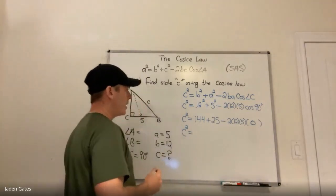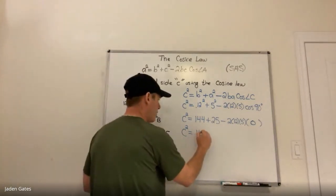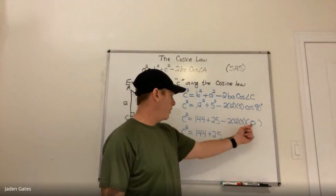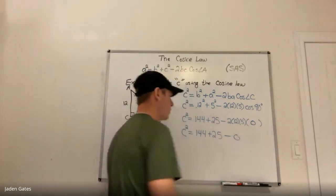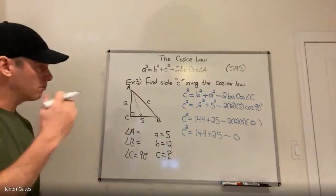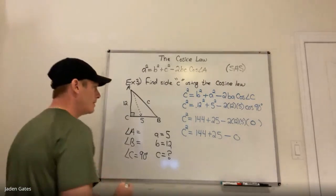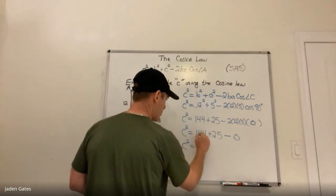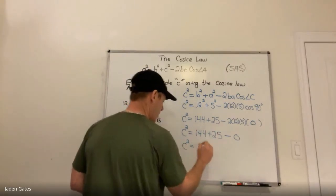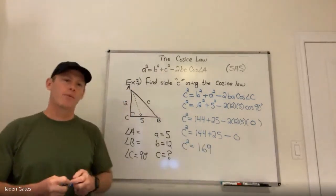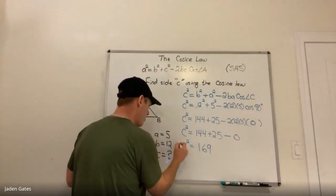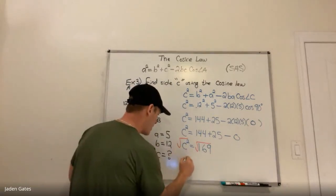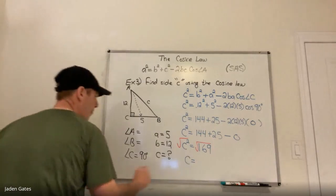C squared equals 144 plus 25. Then I multiply the four numbers — but 0 times anything is 0, so that whole term equals 0. Adding and subtracting: 144 plus 25 minus 0 gives 169. The last step is to take the square root of both sides, and the square root of 169 is 13.